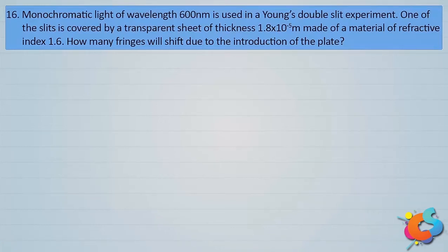Here is the next question. Monochromatic light of wavelength 600 nanometers is used in a Young's double slit experiment. One of the slits is covered by a transparent sheet of thickness 1.8×10⁻⁵ meters made of a material of refractive index 1.6. How many fringes will shift due to the introduction of the plate?